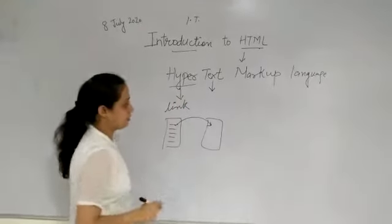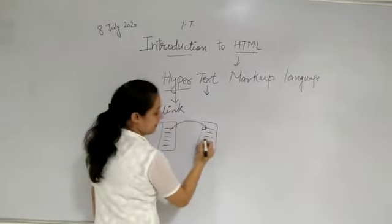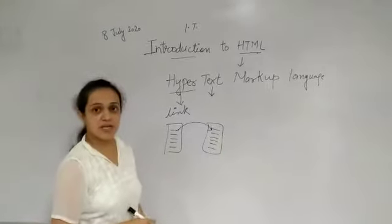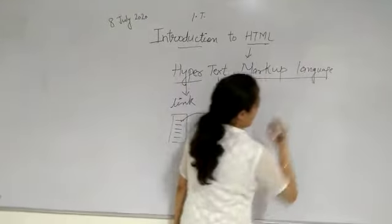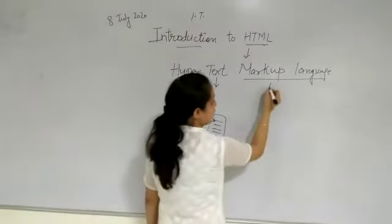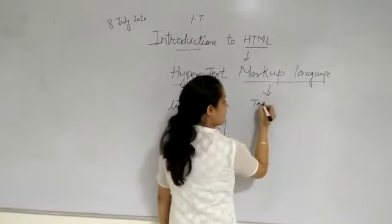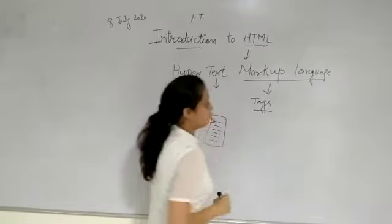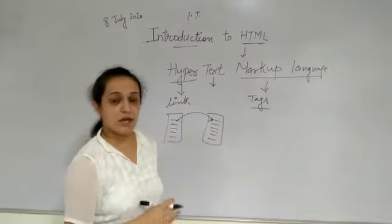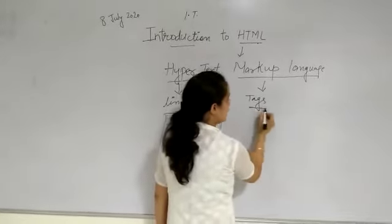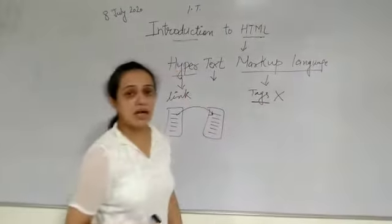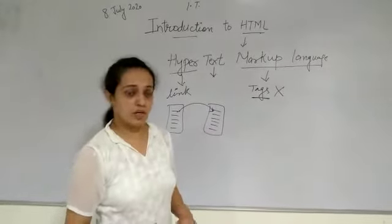Now text, text means whatever the matter that is written on the webpage is treated as your text. Markup language means in HTML to design the web pages, we have to use the tags. If we want to decorate our web page, then we have to use the tags. If we are not using the tags, then our web page is not created.